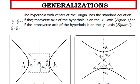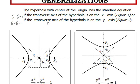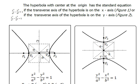For the generalizations, the hyperbola with center at the origin has the standard equation x-squared over a-squared minus y-squared over b-squared equals 1, if the transverse axis of the hyperbola is on the x-axis, as you can see in Figure 1. And if the transverse axis is on the y-axis, we have Figure 2, and the standard equation is y-squared over a-squared minus x-squared over b-squared equals 1.